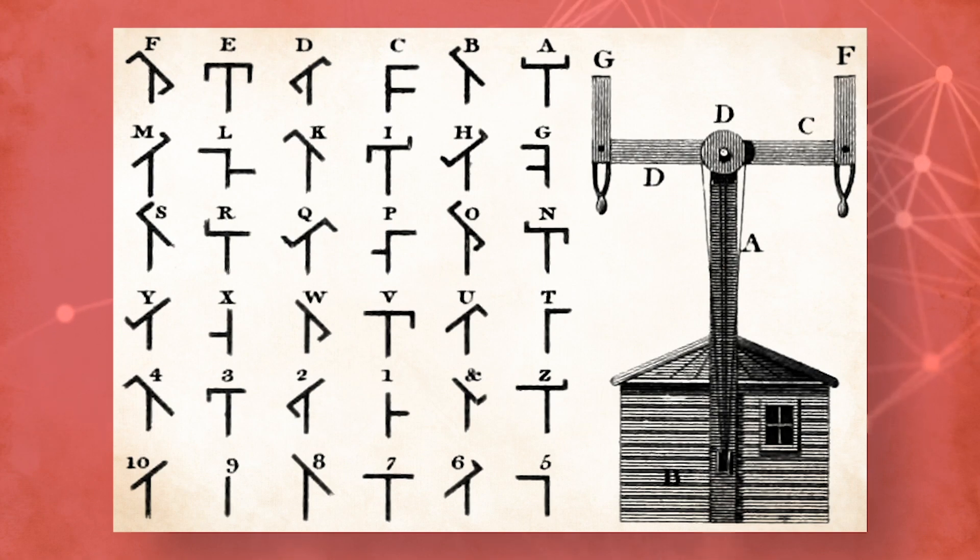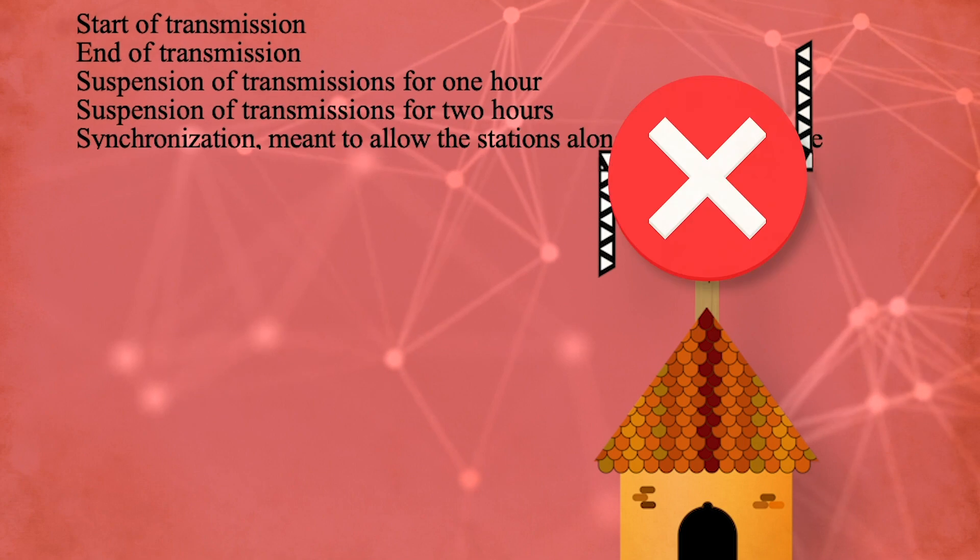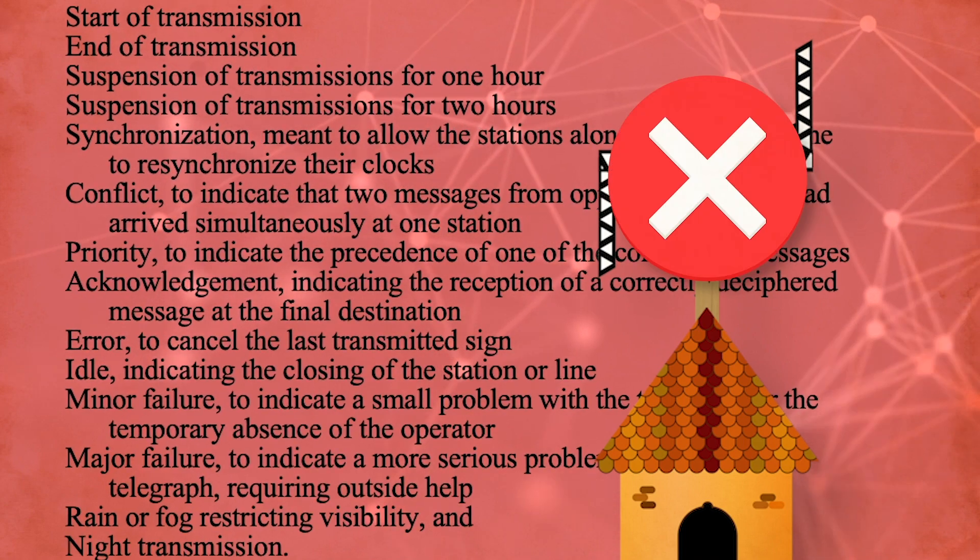But the codes themselves were national secrets and only known to a limited number of operators. But not all of the code was so secret. The error codes had to be known by everybody who worked on the semaphore line.